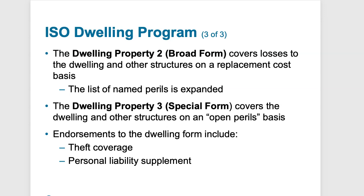All the perils from the broad and basic forms are covered, plus anything else not specifically excluded. The specific exclusions are written into the special form and each contract may differ on exactly what is excluded, depending on who's writing the insurance. Endorsements can be added to any of the dwelling forms — one, two, or three — depending on your needs and the property. The most commonly added coverages are theft and personal liability. Personal liability insurance is available by adding a personal liability supplement to any of the policies, similar to liability coverage in the homeowner's policy.